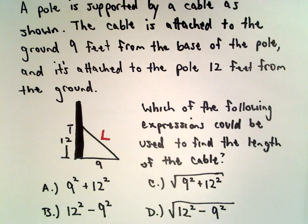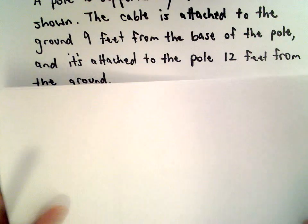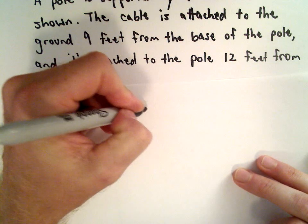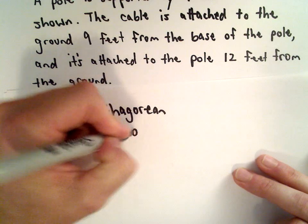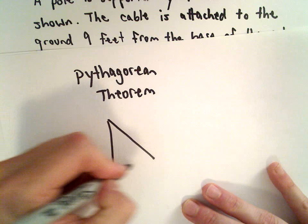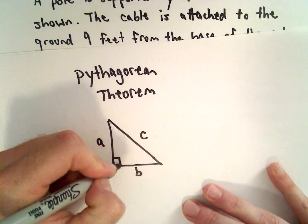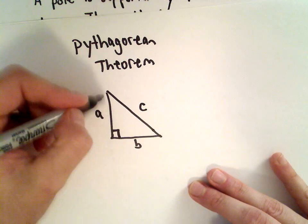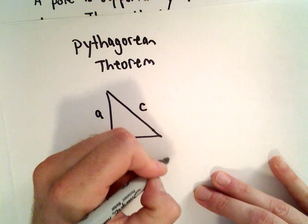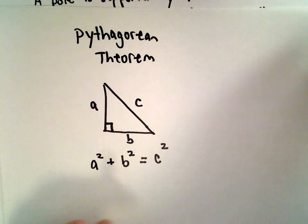The trick to this is just to use the Pythagorean theorem. Recall that says if you have a right triangle, let me label this as A, B, and the hypotenuse is C. It says if we take A squared and we add to that B squared, that's going to equal C squared. Definitely a formula to be familiar with.